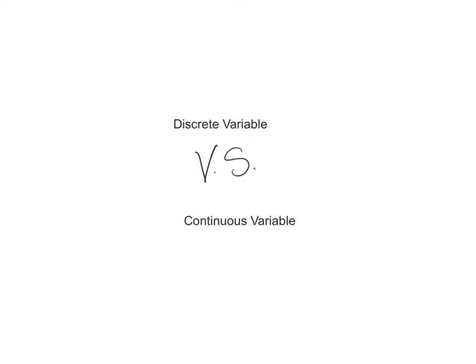In this short video, we're going to discuss the difference between discrete variables and continuous variables. Let's talk about the definitions for both. A discrete variable consists of separate, indivisible categories. Therefore, no values can exist between the two neighboring categories.